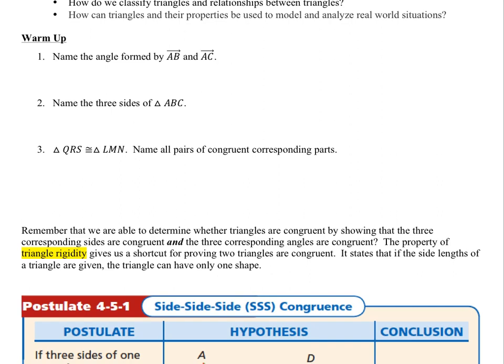Our first warm-up question asks us to name the angle formed by ray AB and ray AC. We can name that angle more than one way. We can call it angle BAC, or angle CAB, or because there are no other angles adjacent to angle A, we can call it angle A also.